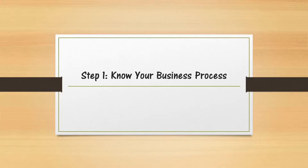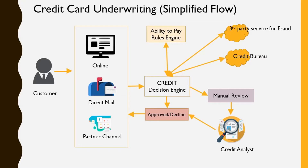Say you are a banking customer and you have identified credit card underwriting as your business process where you want to implement an AI/ML solution. The very first thing in the business understanding phase is to know your business process better — where the information comes from and what decisions are being made. In this example of a credit card underwriting process, a customer can submit an application directly on a website, via direct email, via post, or through a third-party partner website.